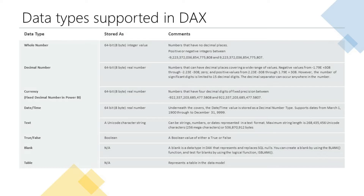This first table shows the different data types with details of how they're stored and some details about ranges and other bits of useful information. When you load new data into a model the modeling engine will attempt to pick the most appropriate data type for a column based on the values being imported into it. Even so it's still a good idea to check the assigned data types as the modeling engine will not always get this right. For example you might have a column where the initial data set only contains integer numbers, and in that case the modeling engine would logically assign it the whole number data type. But where you'll run into problems is if the data for that column subsequently contains non-numeric values, which will result in an error when you try to refresh your data.